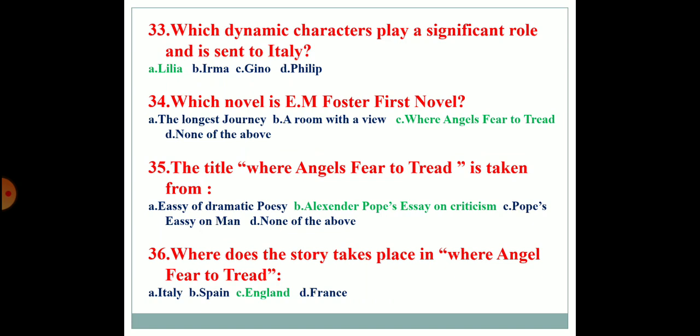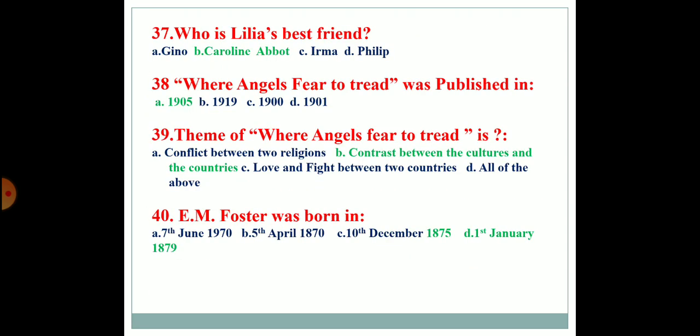The title Where Angels Fear to Tread is taken from Alexander Pope's Essay on Criticism. Where does the story take place in Where Angels Fear to Tread? The story takes place in England. Who is Lilia's best friend? Caroline Abbott is Lilia's best friend. Where Angels Fear to Tread was published in 1905. The theme of Where Angels Fear to Tread is the contrast between cultures and countries. E.M. Forster was born on 1st January 1879. Option D is the right answer.